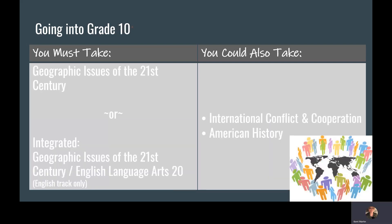Grade 10 has another option class called American History that you can take. There is also an option of taking your geography in an integrated format, paired with a grade 10 English Language Arts class. Students would be with the same group of students and the same teacher for two periods during the day. This option is only available for students of the English track.